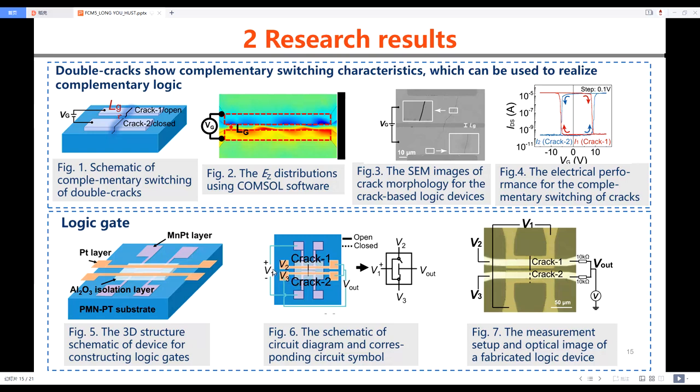On the contrary, when V1 is negative, crack 1 is closed and crack 2 is open. Vout is connected to V2 electrode. This is one fabricated device.